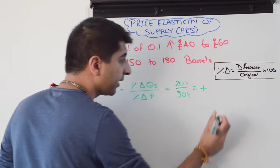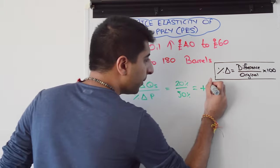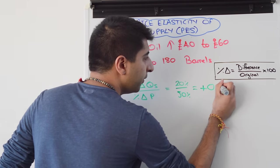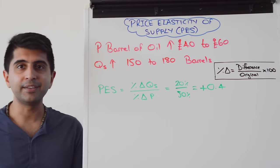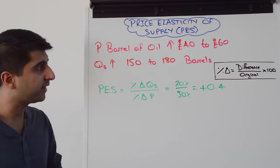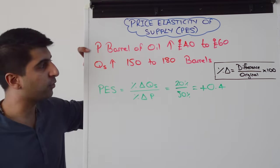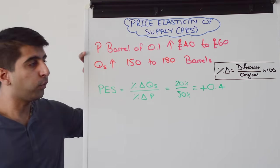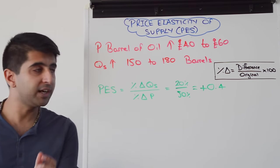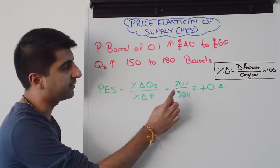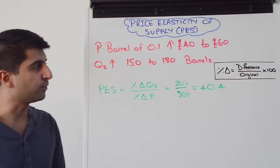Put those two together, do the calculation, and leave the sign in — keep it positive. We get a final PES figure of 0.4. That means supply is price inelastic. In this case it means that as the price of oil increases, quantity supplied also increases but proportionately less than the increase in price. That's the kind of wording you need to use.